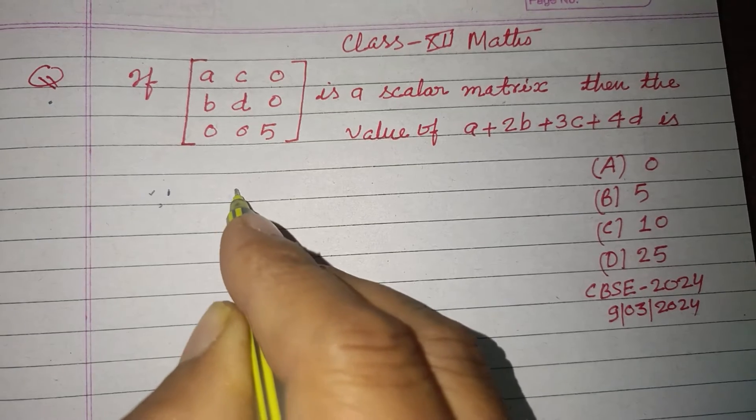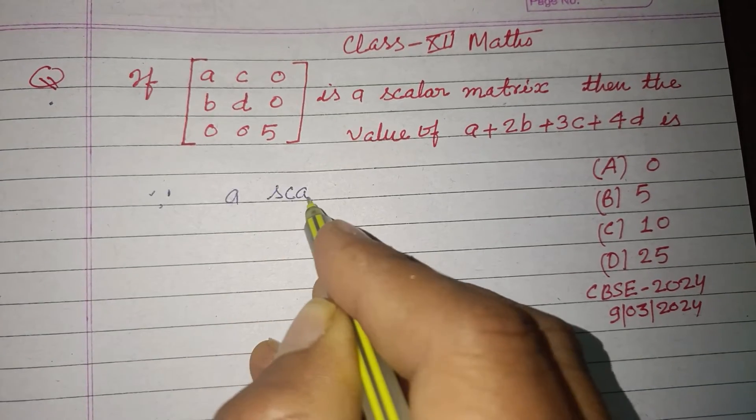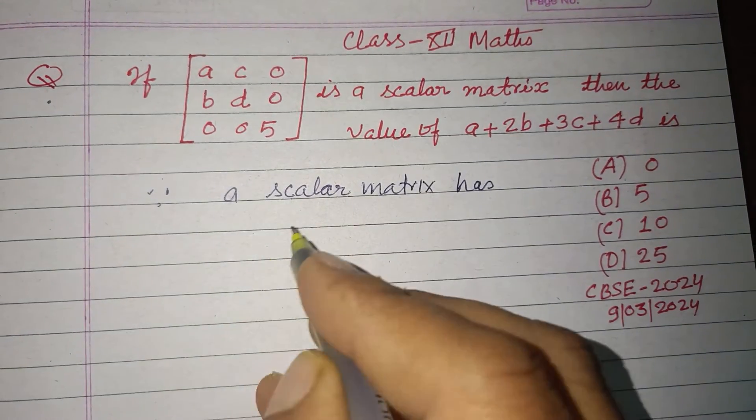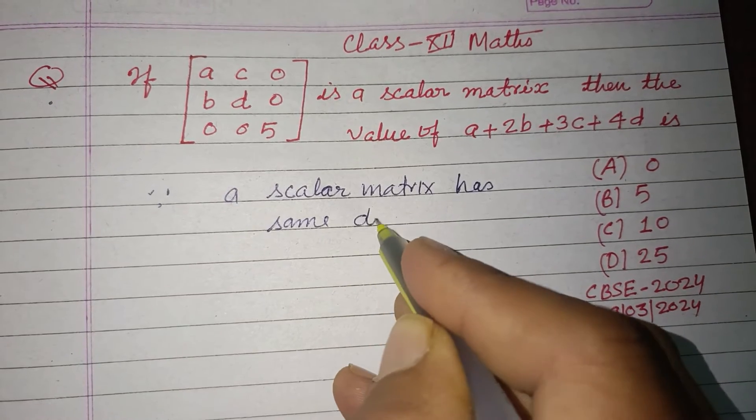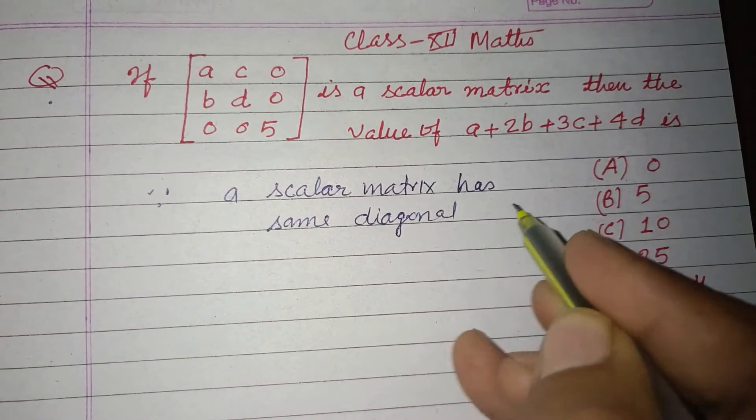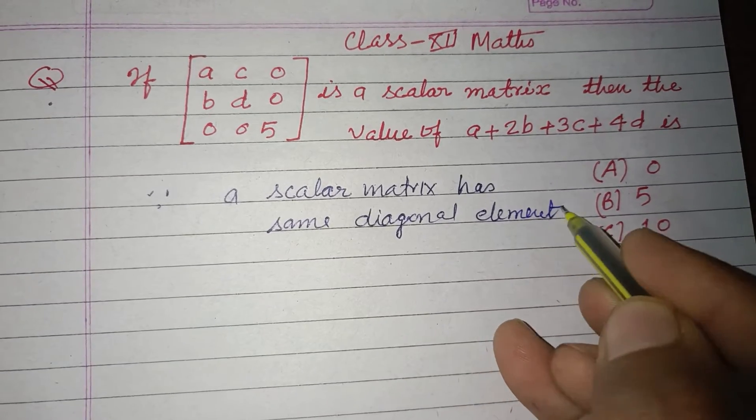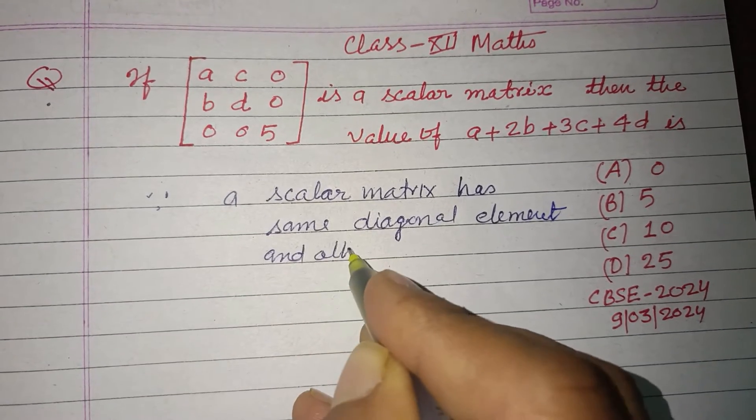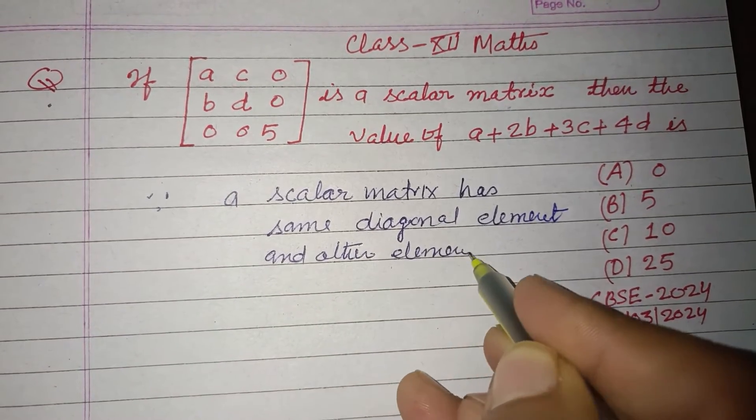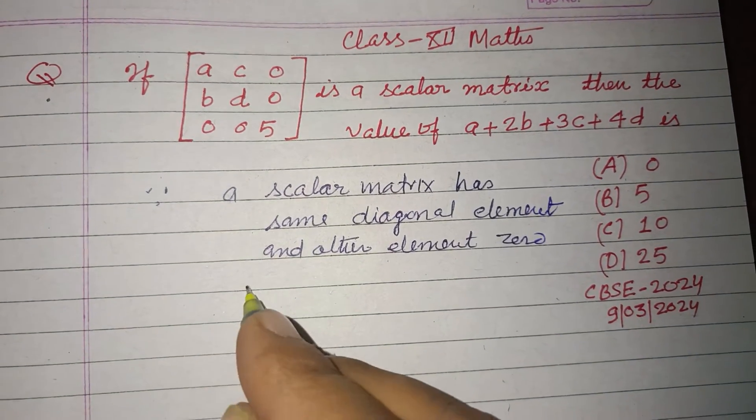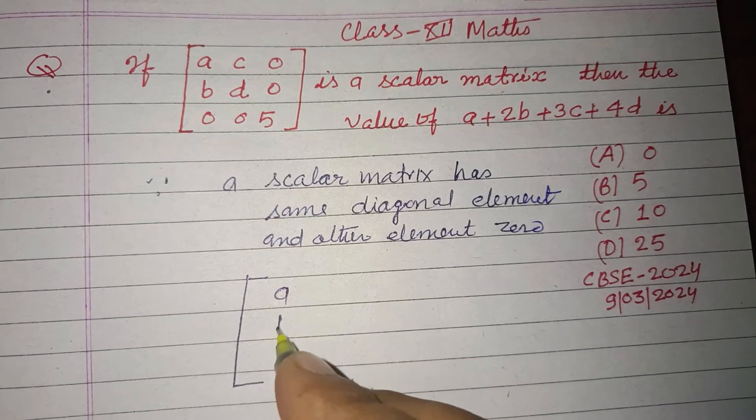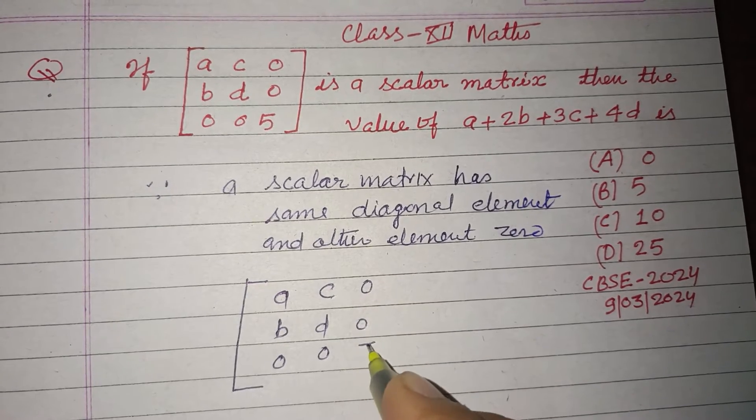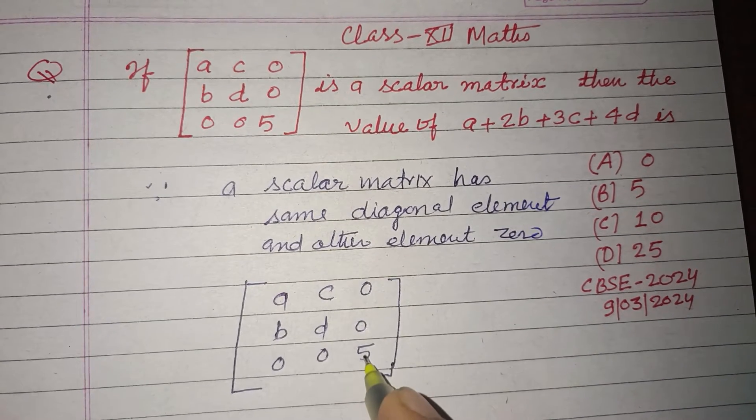Since a scalar matrix has the same diagonal element and other elements are zero, we have the matrix: a, b, 0; c, d, 0; 0, 0, 5. Here one of the diagonal elements is 5.